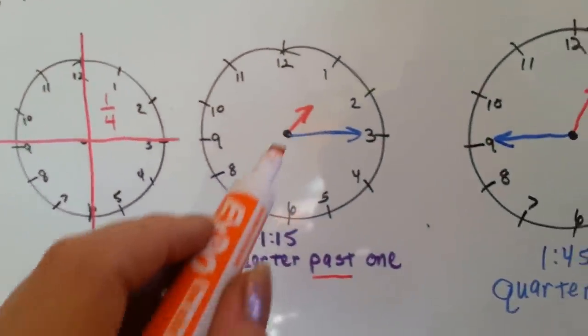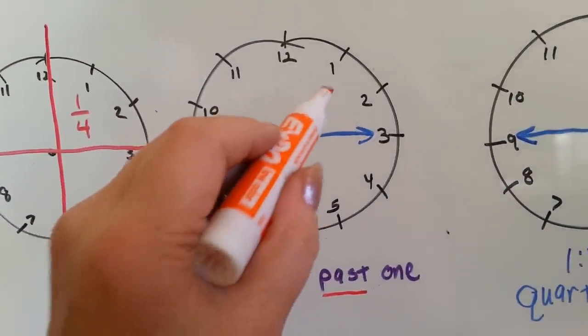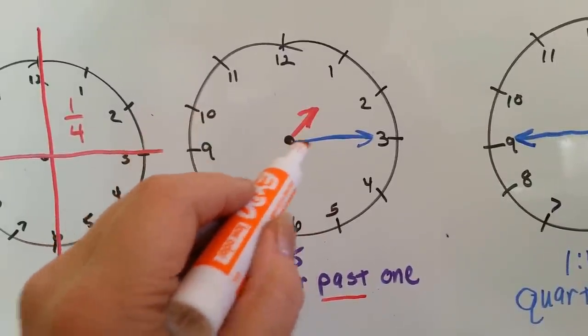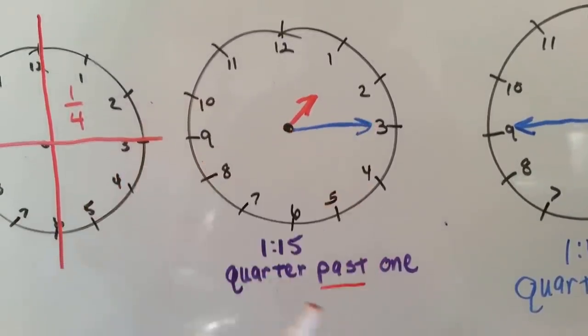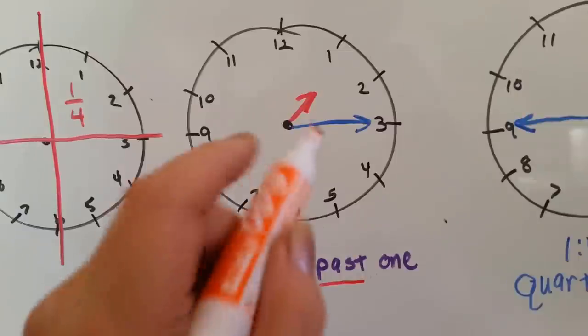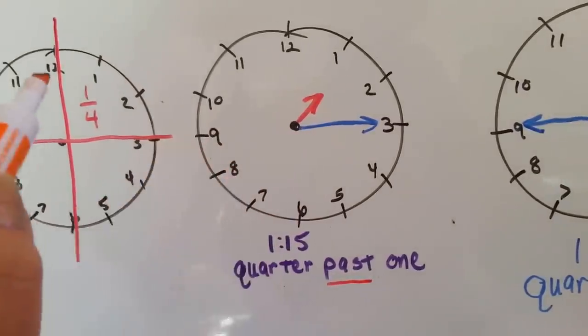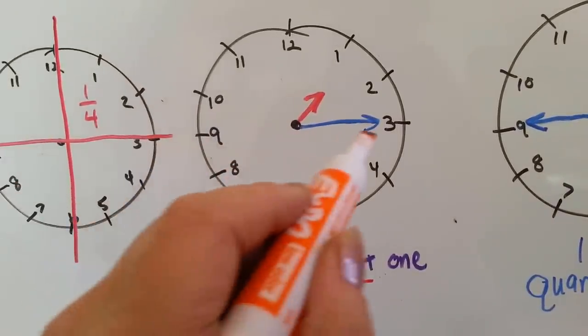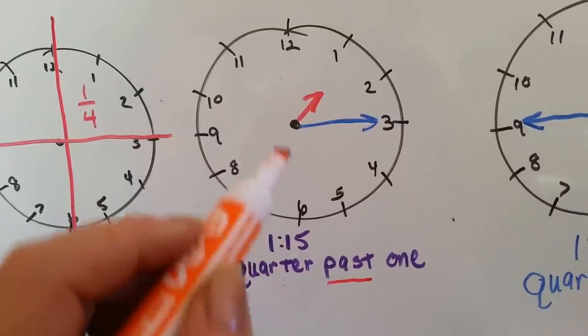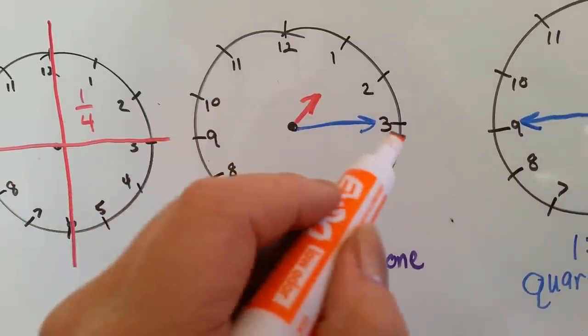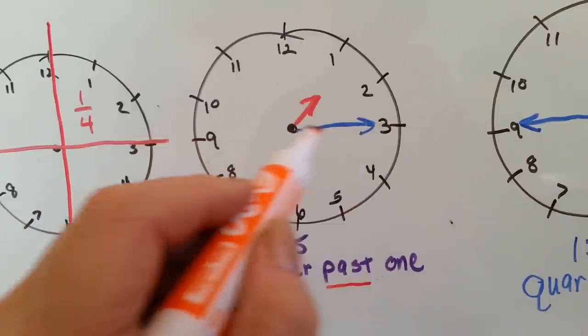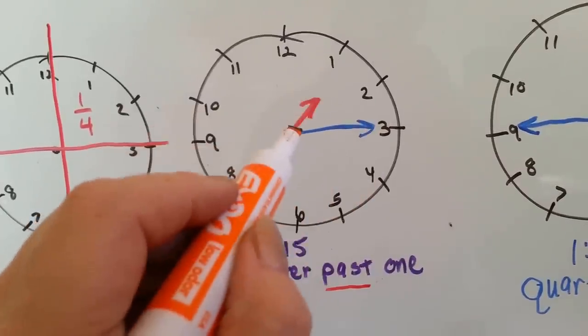So when the hour hand is pointing close to the 1, and the minute hand is pointing to the 3, it's 1:15, as we've said in the other videos, but it's also a quarter past 1. It's one-fourth past the hour of 1 o'clock.